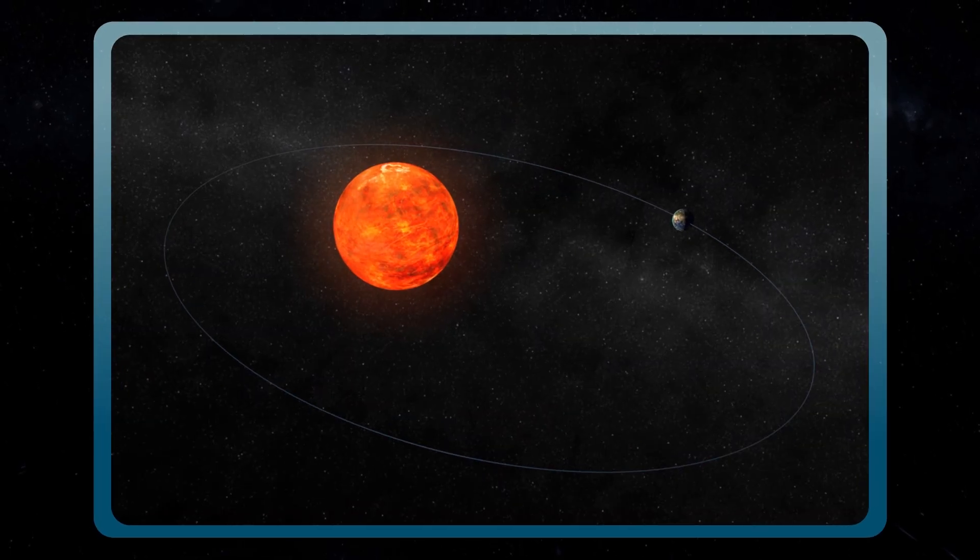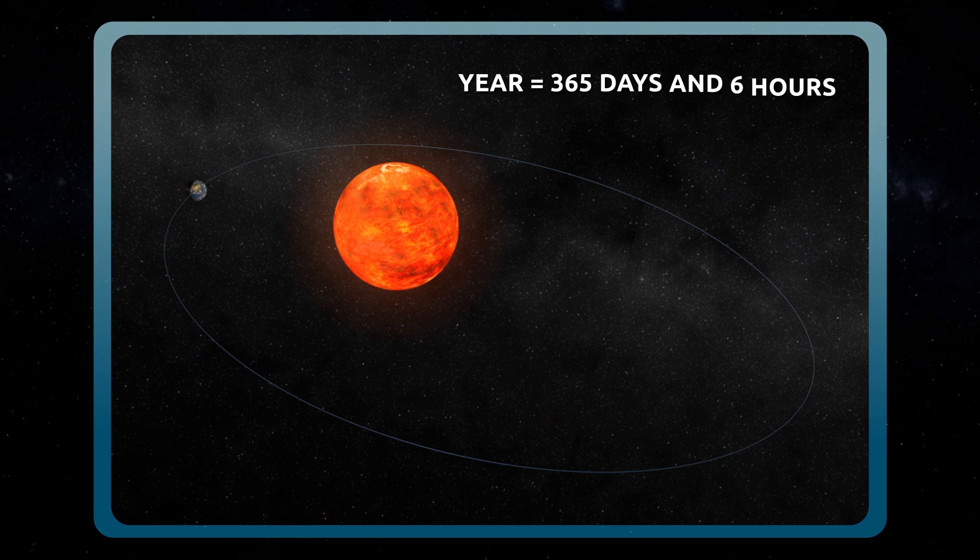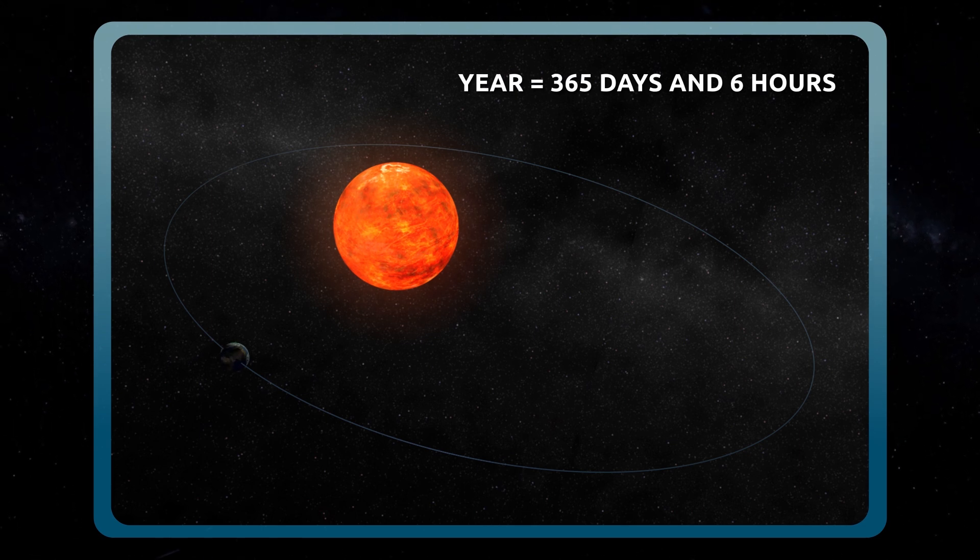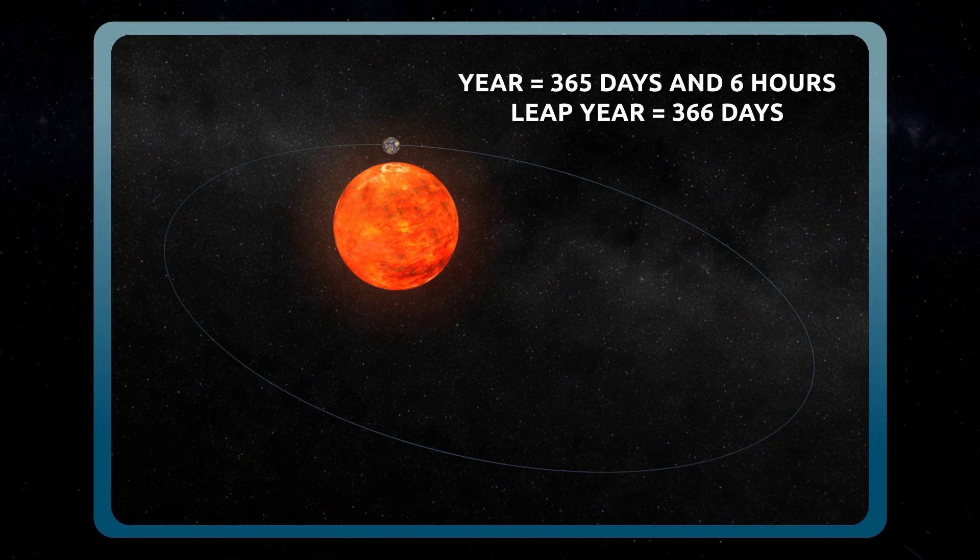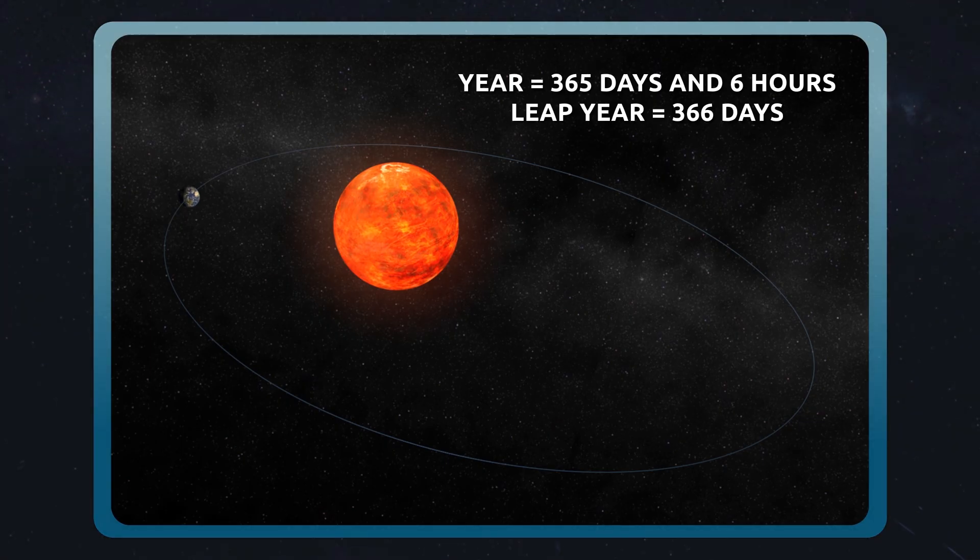Owing to the fact that the revolution of the Earth around the Sun doesn't take exactly 365 days but 365 days and six hours, there are leap years which have one more day, 366 days. That's why every four years February has one more day, day 29.